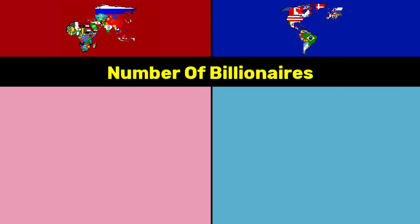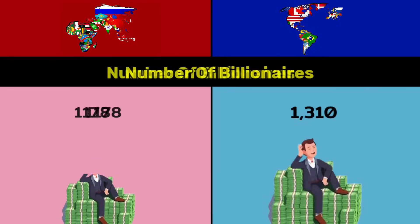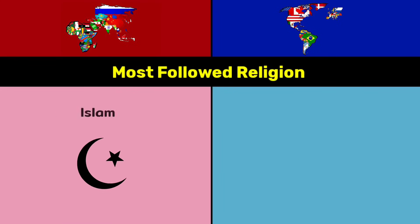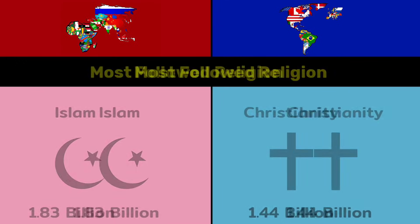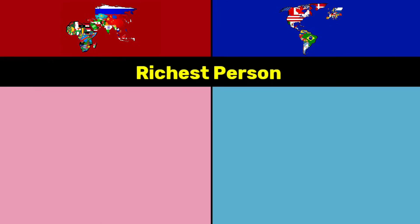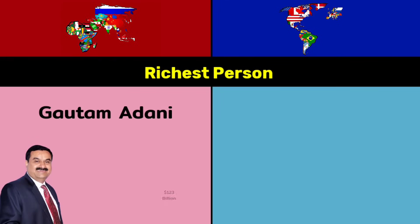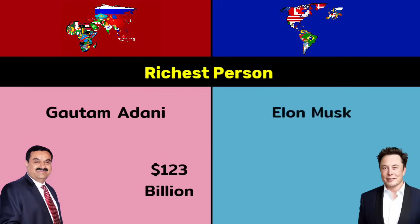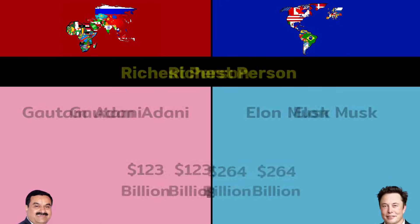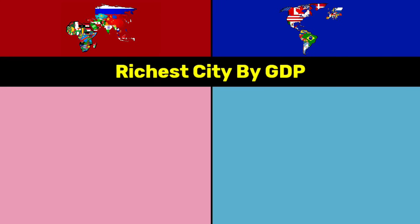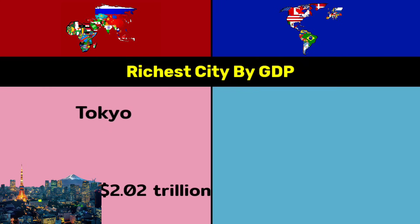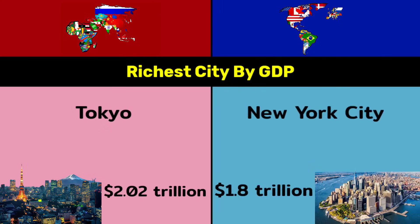Number of billionaires: 1,178 vs 1,310. Most followed religion: Islam at 1.83 billion vs Christianity at 1.44 billion. Richest person: Gautam Adani at $123 billion vs Elon Musk at $264 billion. Richest city by GDP: Tokyo at $2.02 trillion vs New York City at $1.8 trillion.